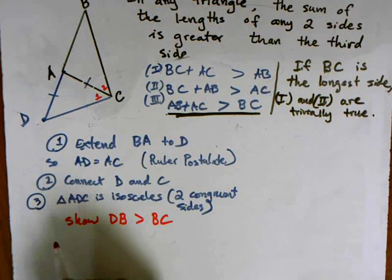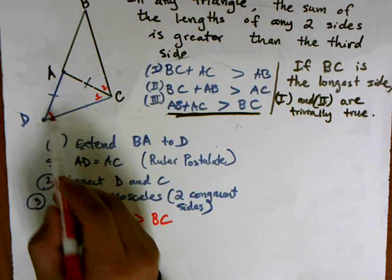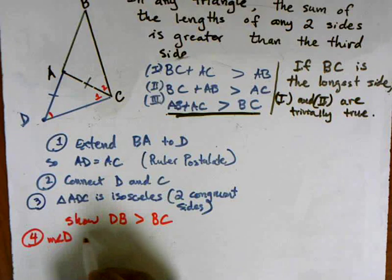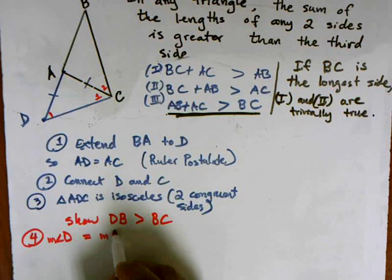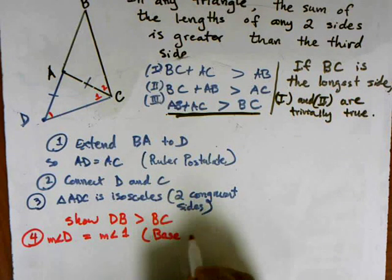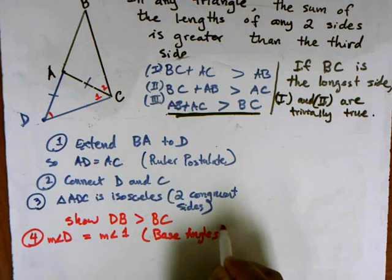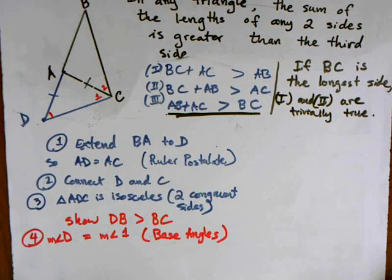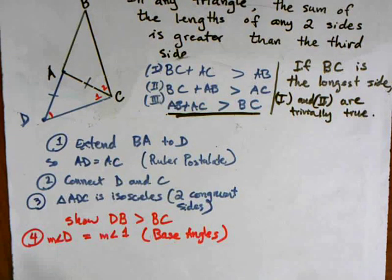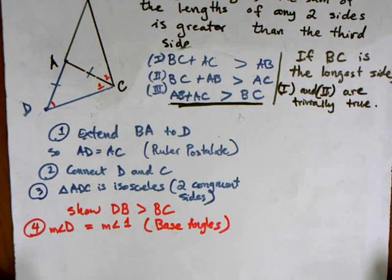The first thing I can say is that angle D and angle one are congruent. So the measure of angle D equals the measure of angle one, and this is by the base angles theorem. It basically says that if these two sides are congruent, then the two base angles must also be congruent.